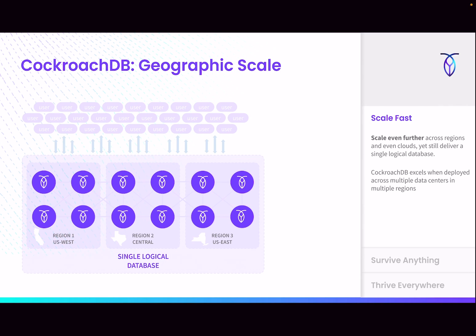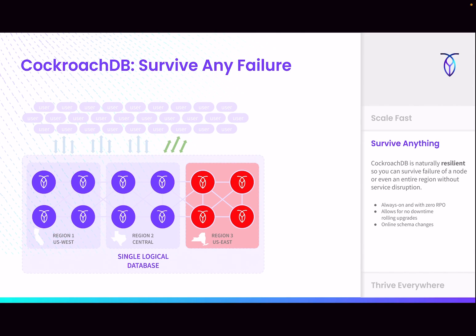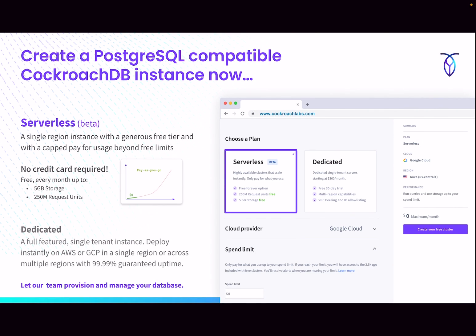We excel at multi-region scaling. You can expand into more regions of the planet, and we can also use this so that you can be resilient to an entire regional failure. We have very exact controls at the row level for each table in terms of what you want to survive — the failure of a server, a rack, a data center, whatever you need. That's basically a simple configuration of the database, and you're ensured that your data is always correct and always available.